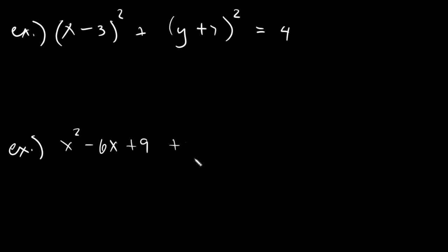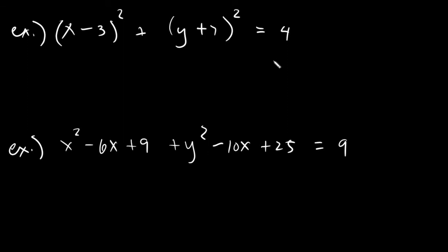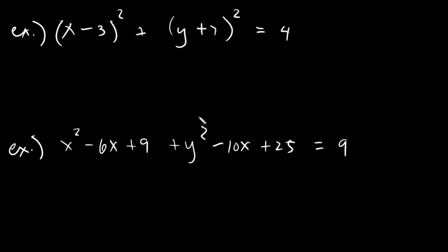We'll have three cases here. The first case: it's very obvious — it's already in the square of binomial (SB) form. The second case: it would already be in PST form — you will notice these are perfect square trinomials. The last case: it's not obvious at all, so you will have to use completing the square.